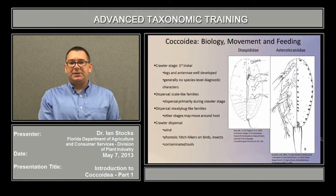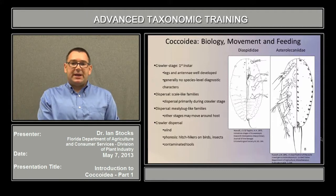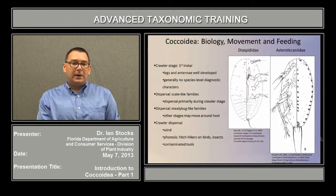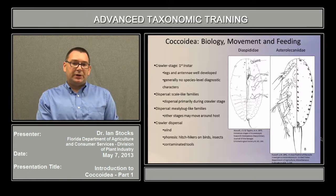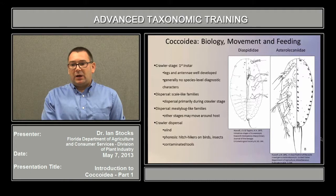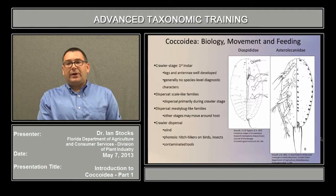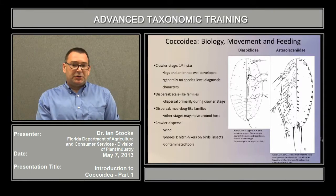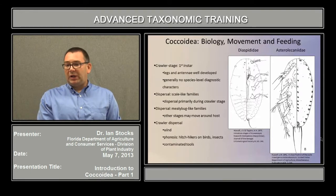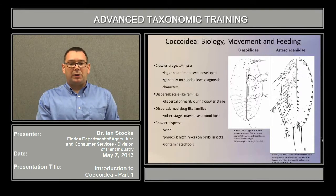For dispersal in the scale-like families, this occurs primarily during the crawler stage. After they molt into the second stage, they are essentially affixed to the plant substrate and won't move again. For the mealybug-like families, dispersal can continue on the plant material throughout other stages, and so they are able to move around on the different parts of the plant in between molts. In fact, some species — for instance, cushion scales — the immatures are typically found on one part of the plant and the adult females are found on another part of the plant.